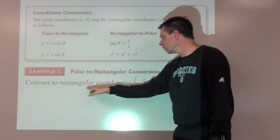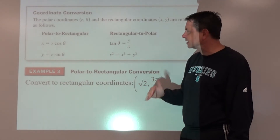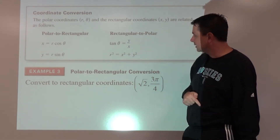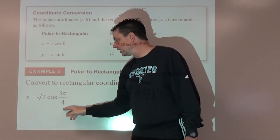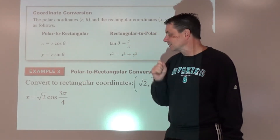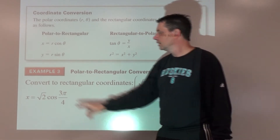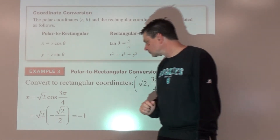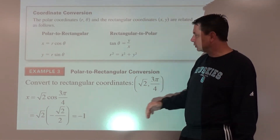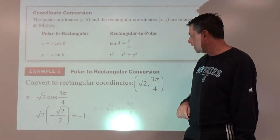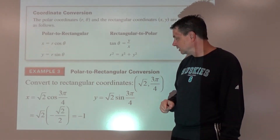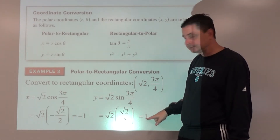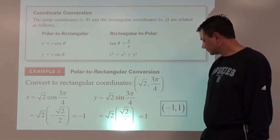Example number three: convert the polar point (root 2, 3π/4) into rectangular. The x coordinate is r times cosine theta: cosine of 3π/4 is in quadrant two, so that's negative root 2 over 2, times root 2, giving x equals negative 1. For y: r times sine of 3π/4 — quadrant two so sine is positive — root 2 times root 2 over 2 gives y equals 1. Final answer: negative 1 comma 1.